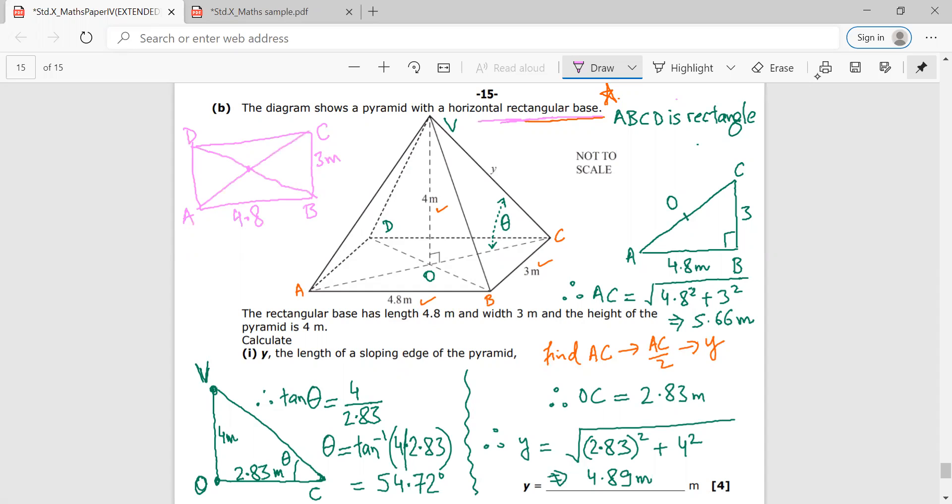Okay, so the first thing is that DB would be equal to AC. This is from basic geometry. DB would be equal to AC, the diagonals would be equal. And they would also bisect each other. Therefore, if this is the midpoint of this rectangular base, all these sides would be equal. Any doubt?